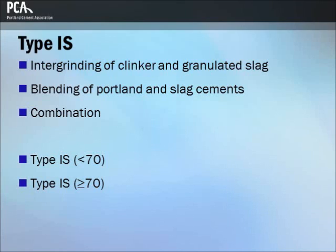Type IS, or Portland blast furnace slag cement, is manufactured by either intergrinding Portland cement clinker and granulated blast furnace slag, blending Portland cement and slag cement, or a combination of intergrinding and blending. Portland blast furnace slag cement is classified into two categories depending on its slag cement content. Type IS(≤70) is not used alone for structural concrete applications.